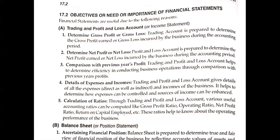Trading and Profit and Loss tells us gross profit or gross loss — how much gross loss or gross profit in the trading time during the entire accounting period. We know net profit and net loss: first we calculate gross profit and gross loss, then we add or deduct direct and indirect expenses to get net profit and net loss. We compare the previous year's profit with the current year, and Trading and Profit and Loss helps us a lot in that comparison.